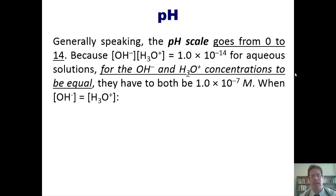Now, generally speaking, the pH scale goes from 0 to 14. Because the concentrations of base and acid equivalents multiplied together in an aqueous system equals this number, for the hydroxide and hydronium concentrations to be equal, if you're at neutral solution, they both have to be 1 times 10 to the negative 7th molar. When the hydroxide concentration equals the hydronium concentration, then pH is equal to the negative log of H+, which is the same thing as the negative log of 1 times 10 to the negative 7, which comes out to be 7.